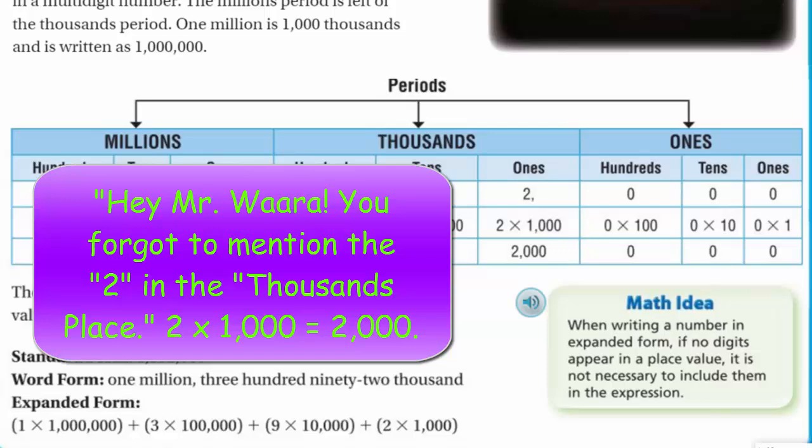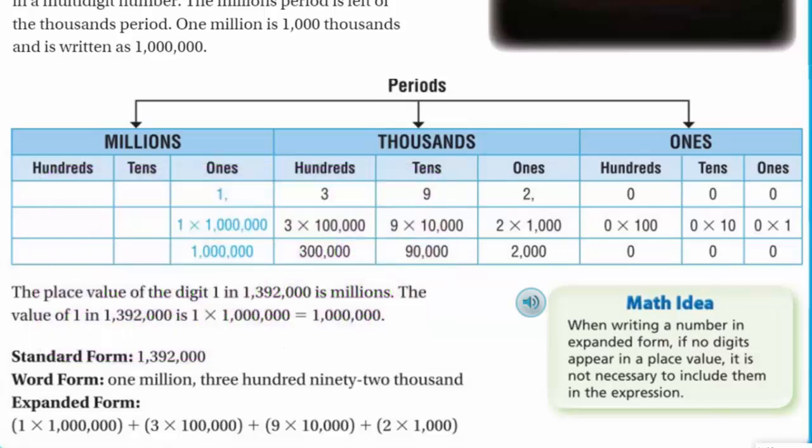And what do we have here? It says the math idea: when writing a number in expanded form, if no digits appear in a place value, it is not necessary to include them in the expression. And we can actually look at that by simply look at that very last one where we had 2 times 1,000. Yeah, we didn't write anything for the hundreds, the tens, and the ones place because the digits were zero. So that's what that little math idea means. Okay?